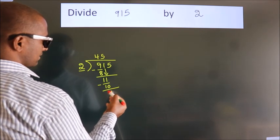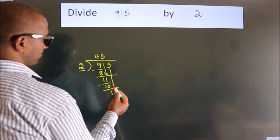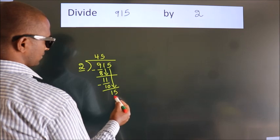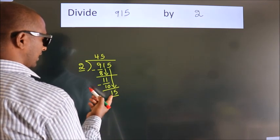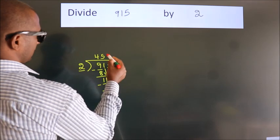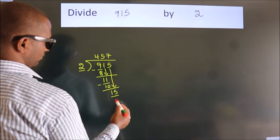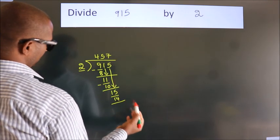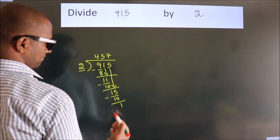After this, bring down the beside number. So, 5 down, so 15. A number close to 15 in 2 table is 2 7s, 14. Now we subtract. We get 1.